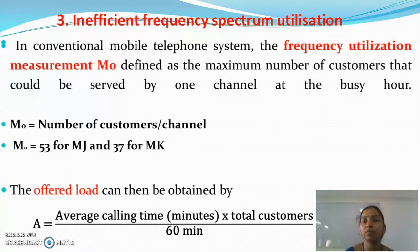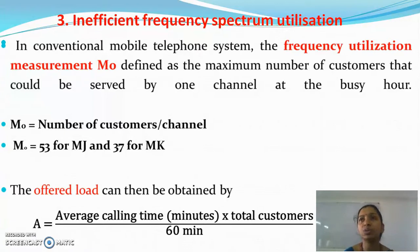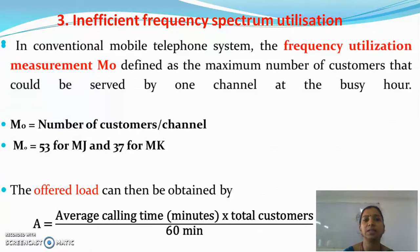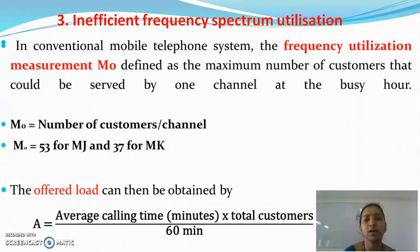The third major limitation — and most important — is inefficient frequency spectrum utilization. The spectrum utilization is considered inefficient when we cannot provide service to a sufficient number of users. In conventional mobile telephone systems, the frequency utilization measurement M0 is defined as the maximum number of customers that could be served by one channel.